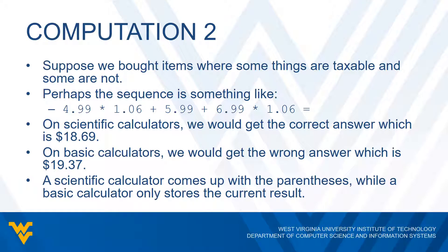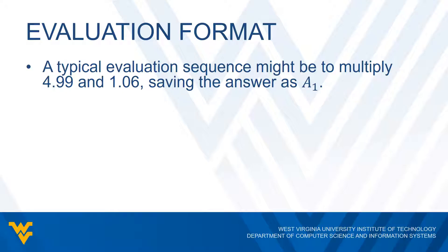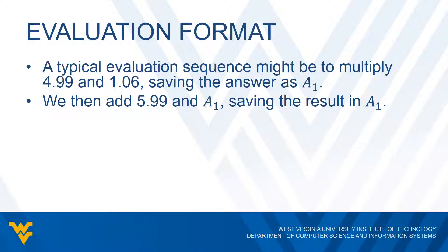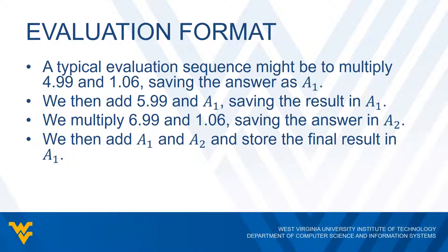But if we use a basic calculator that gives us the running result after each computation, we get the wrong answer — $19.37. This is because scientific calculators handle parentheses, while basic calculators only store the current result. A typical way to evaluate this correctly is: take $4.99 and $1.06, multiply them, and store that in variable A1. Then add $5.99 to A1 and store the result back in A1. Then multiply $6.99 by $1.06 and store that in A2.